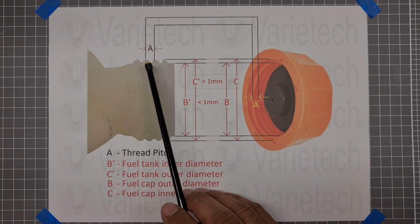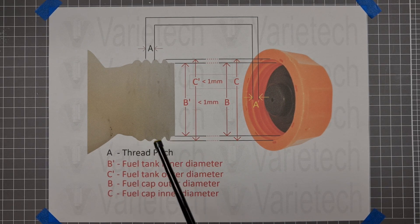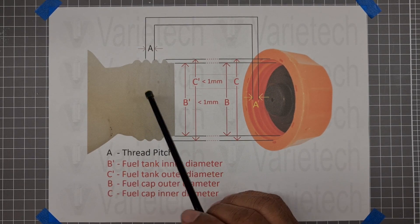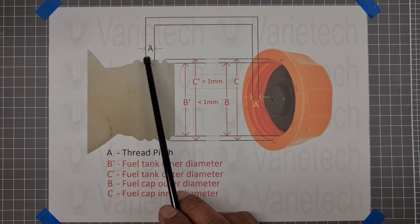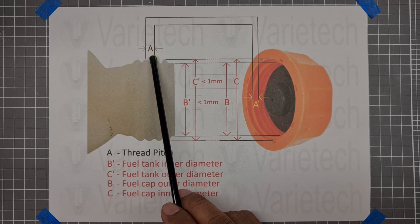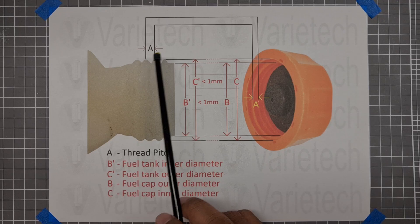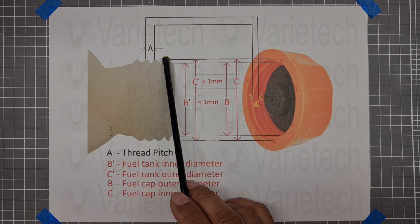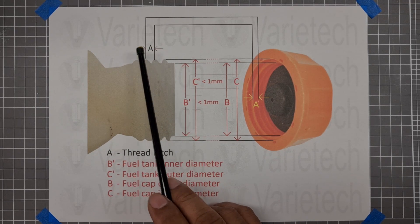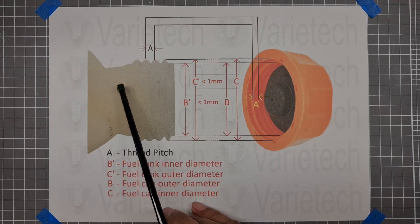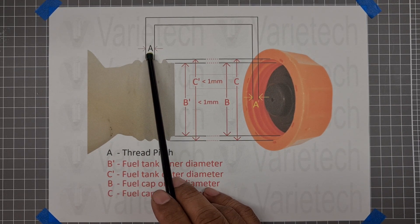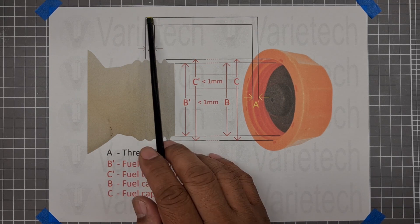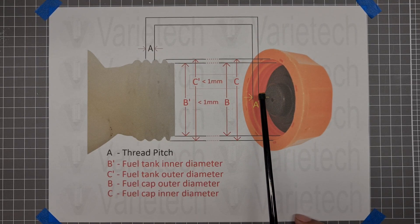So first of all, I would like you to measure the thread pitch of your fuel tank. What is a thread pitch? A thread pitch is the distance between each thread. So let's say for example, if you have one, two, three, four threads, you measure the distance from here to here and you divide it by four, and that's your distance measurement in millimeter. So that's also the same distance on the fuel cap, the thread pitch on the fuel cap as well, which is A.